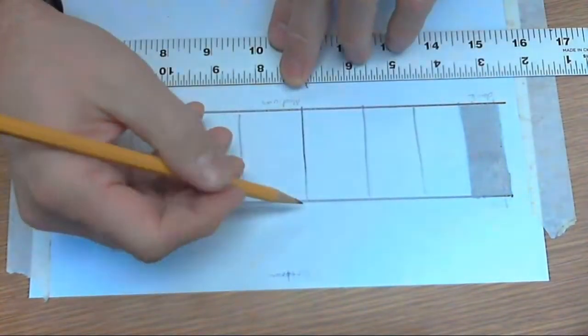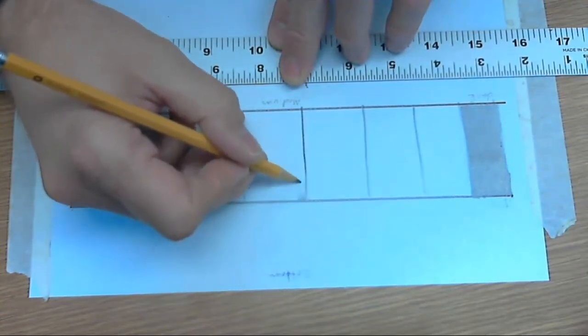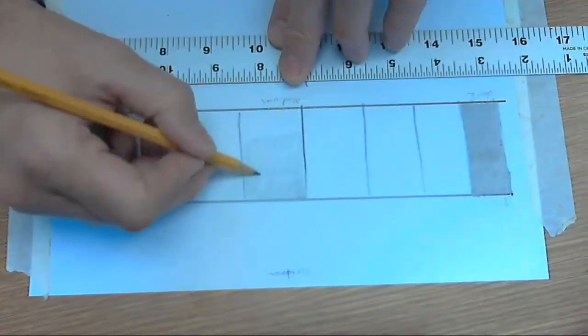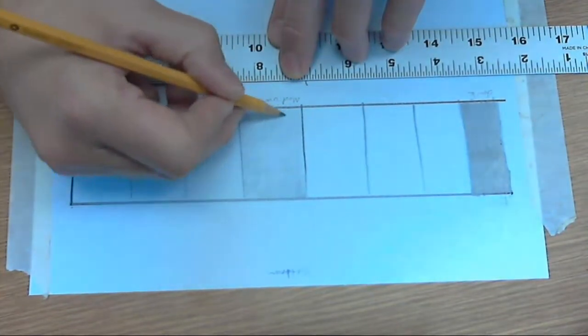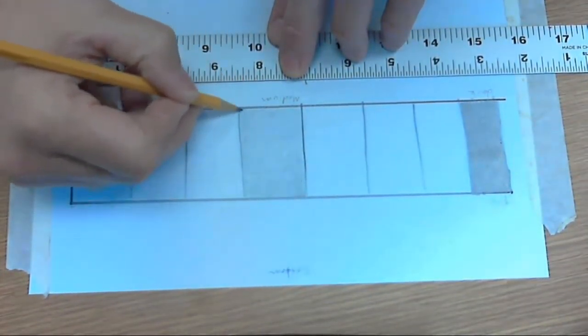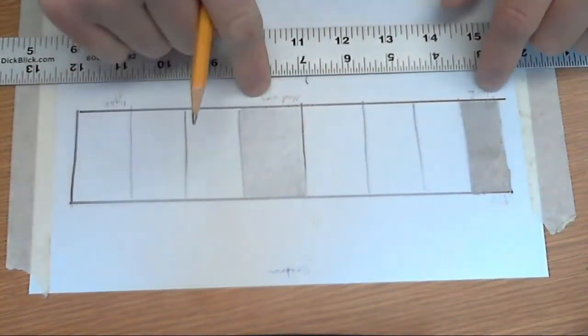And now I'm gonna do a medium tone. So again, I'm gonna start, but this time I'm gonna start with a really light touch, and I'm just gonna make little circles. Alright, so now I have light tone, dark tone, medium tone.